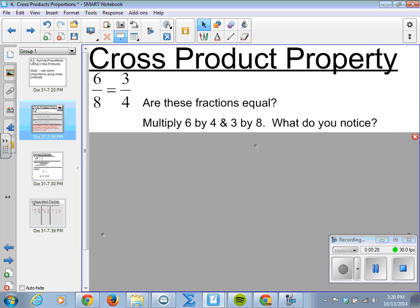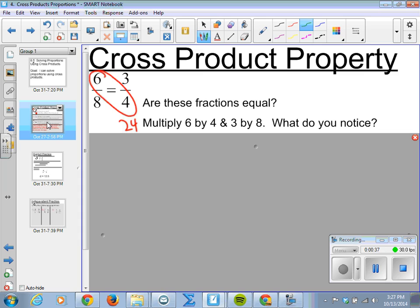But what if we were to multiply diagonally? Multiply 6 by 4, gives us 24, and we multiply 8 by 3, also gives us 24, and we should notice that these are equal.